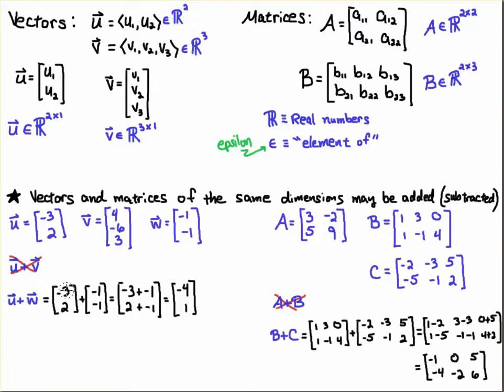So I would simply add the -3 plus the -1, or the 2 plus the -1, and perform that operation, and we'd get -4, 1. Likewise, if I were to try to add A plus B, I cannot because they're not compatible for addition or subtraction.